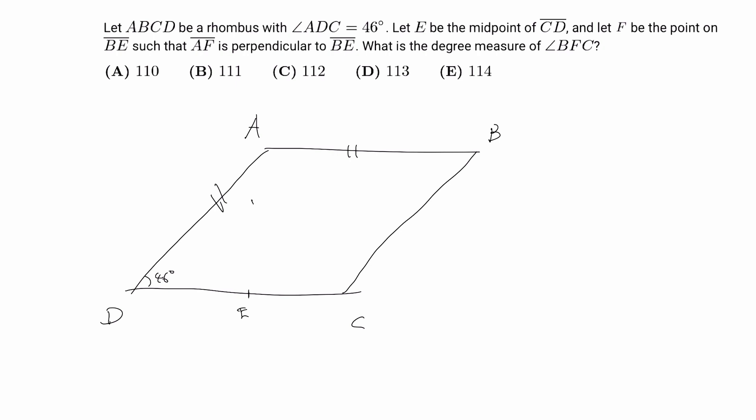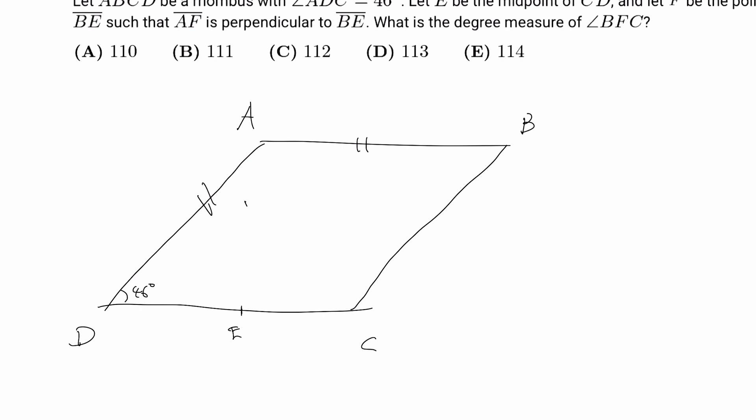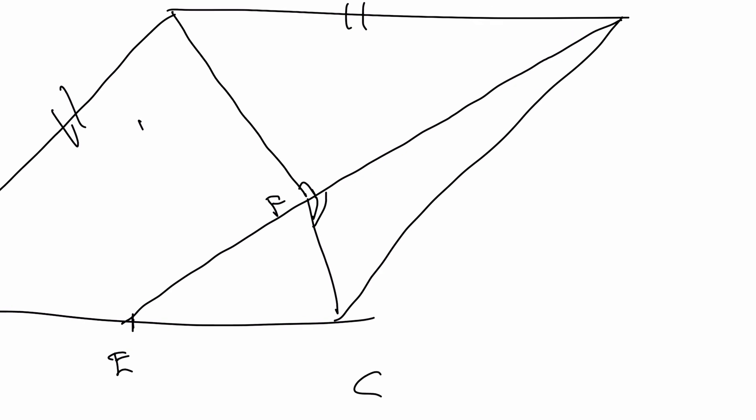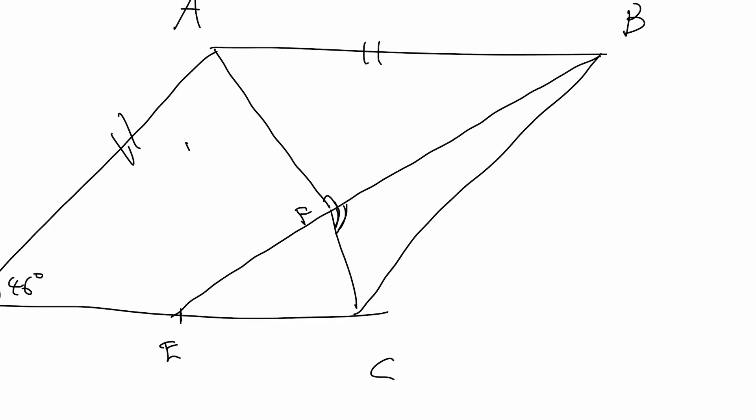Let F be the point on BE such that AF is perpendicular to BE. So we want to draw AF such that AF is perpendicular to BE, and we want to find the angle measure of BFC, which is this angle that I marked over here. Okay, so we want to find this angle over here. How can we find it more easily?